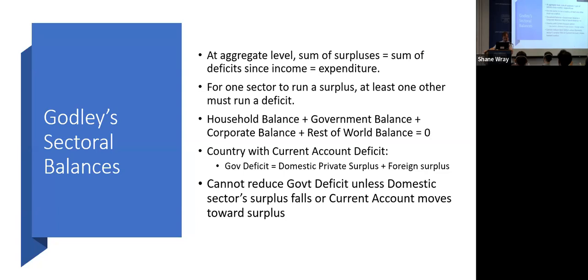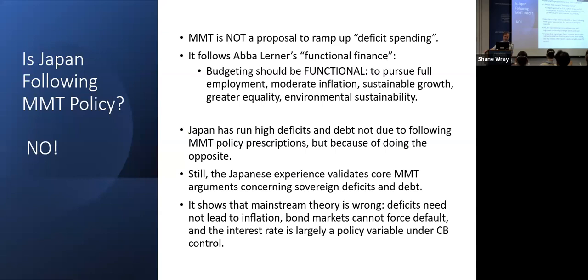Godley's sectoral balances: at the aggregate level, the sum of surpluses equals the sum of deficits, because income must equal spending — assured by national income accounting. For one sector to run a surplus, at least one other must run a deficit. Household balance plus government balance plus corporate balance plus rest-of-world balance must sum to zero. A country running a current account deficit, like the United States, cannot reduce its deficit unless the domestic sector's surplus falls or the current account moves toward surplus — and policymakers don't control those other balances.